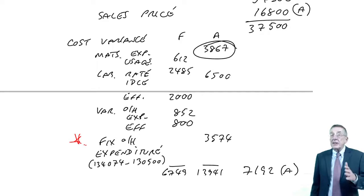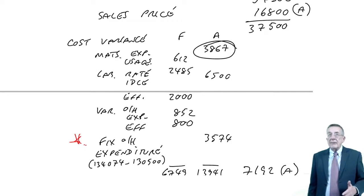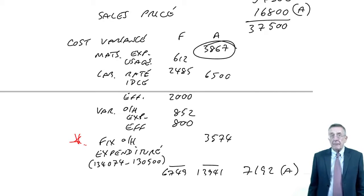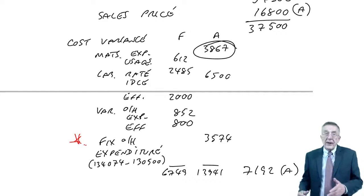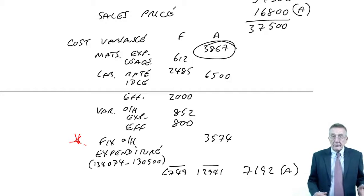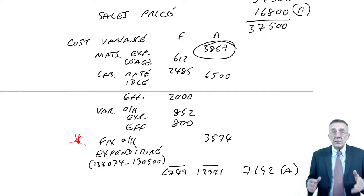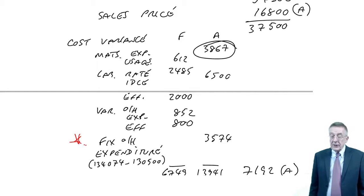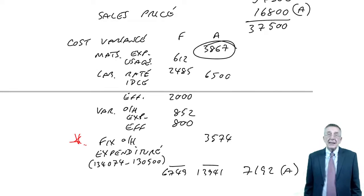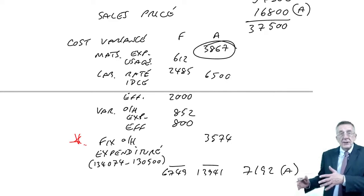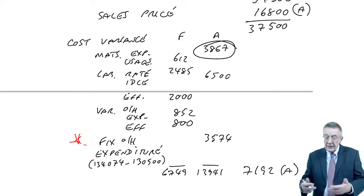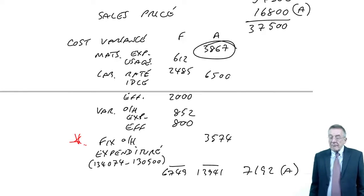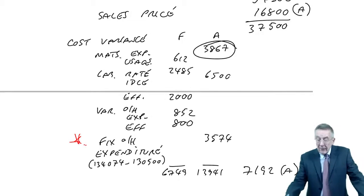This is vital, because even if there are no basic variances at all in your paper F5 exam, and it's only the advanced variances in the next chapter, there is absolutely no doubt there's a section C question which is very likely. Part of it will be arithmetic calculations, part of it will be discussing and interpreting the variances. The advanced variances use the same sort of thinking as in this one.